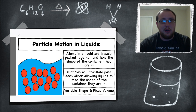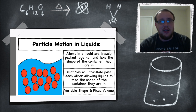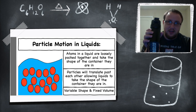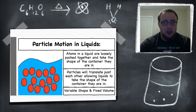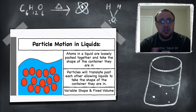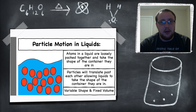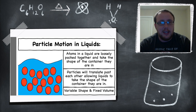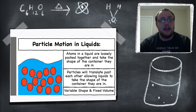Next are liquids. Atoms in liquids are loosely packed together and they take the shape of whatever container they're in. So if I'm drinking water out of my thermos or my coffee cup, whatever the size and shape of the container, that liquid will change its shape to fit. This is because the particles or atoms are very loosely bound together, and these particles will translate past each other, allowing the liquid to take the shape of the container it's in.